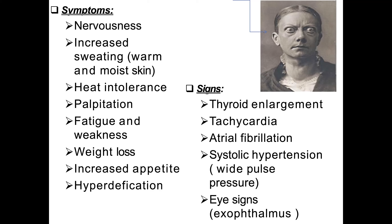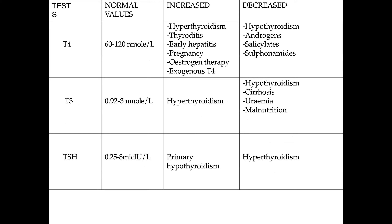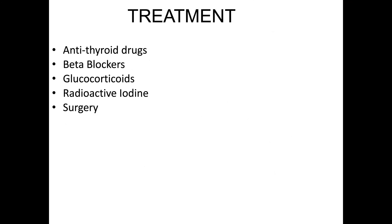Hyperthyroidism is generally more common in females, primarily aged 20 to 40. A lot of times we don't know what causes it, but the thyroid will for some reason become two to three times as productive as it should be. Treatment generally involves steroids, radiation, and finally surgery. Treatment options include antithyroid drugs, beta blockers, glucocorticoids, radioactive iodine, and surgery.